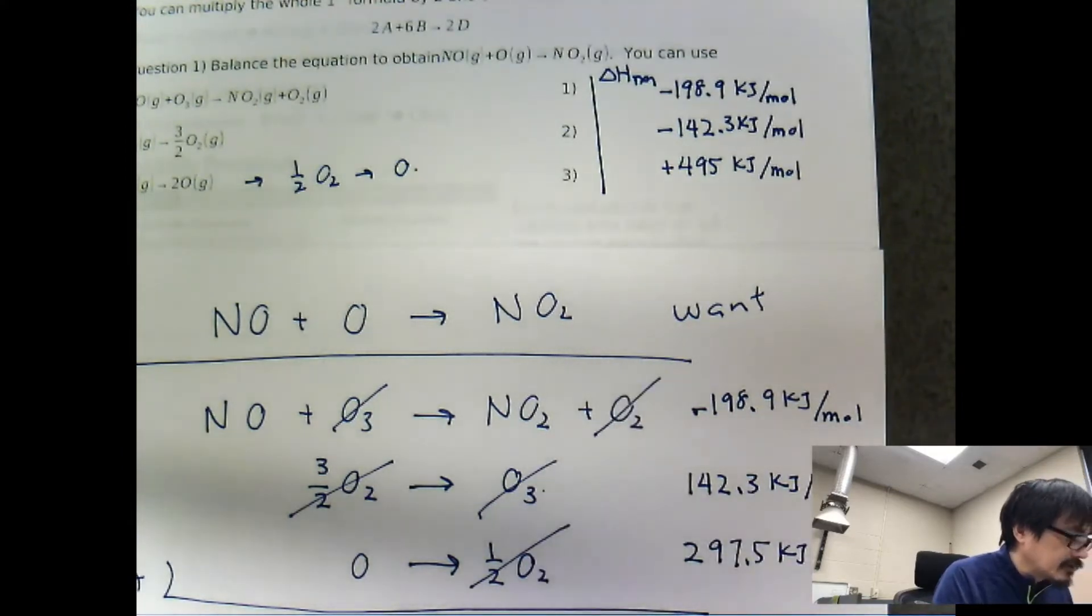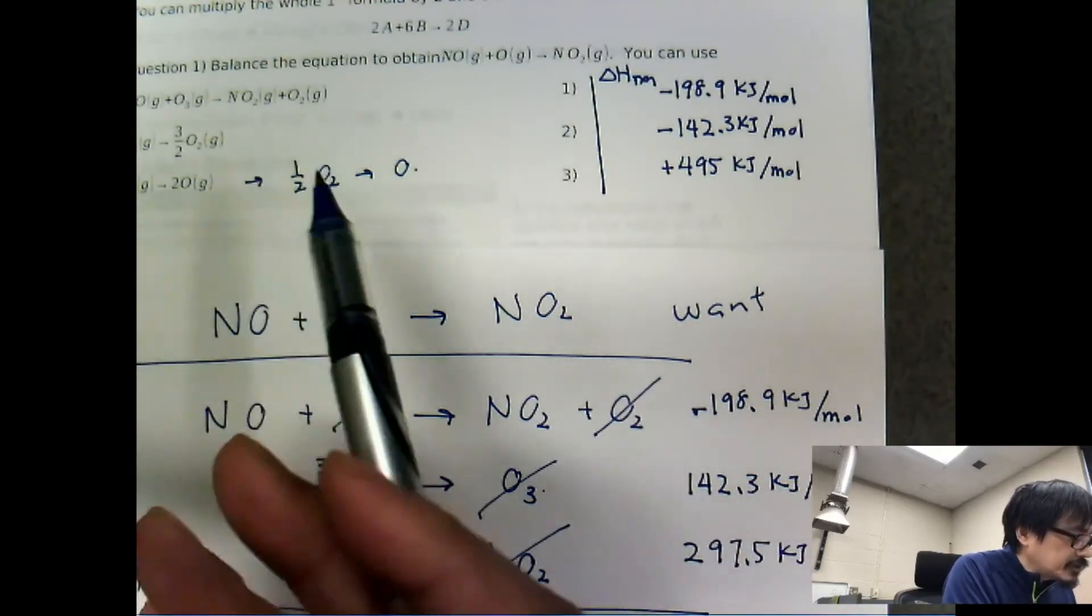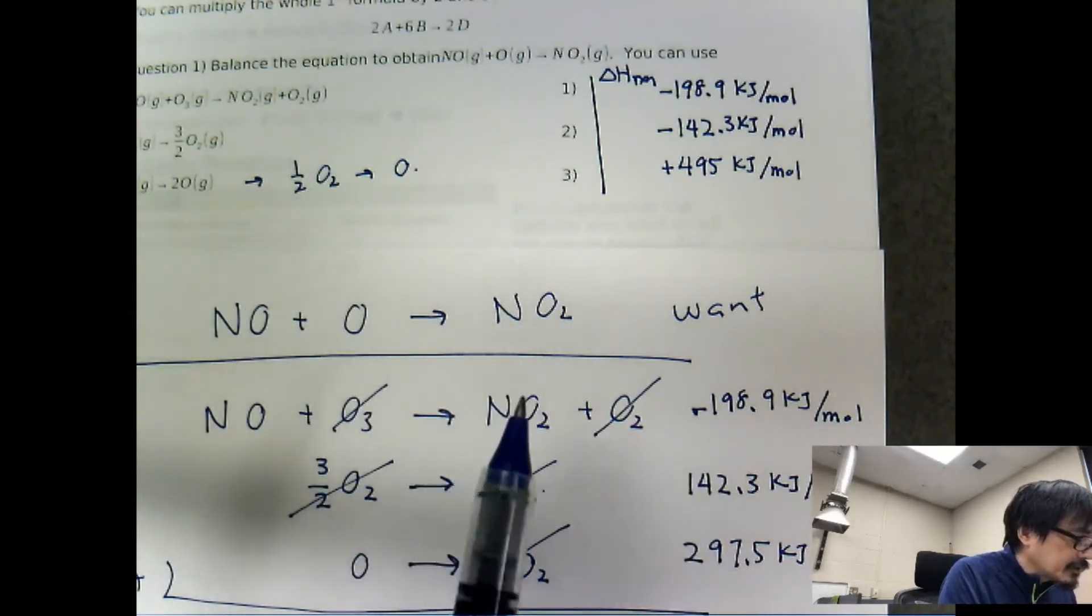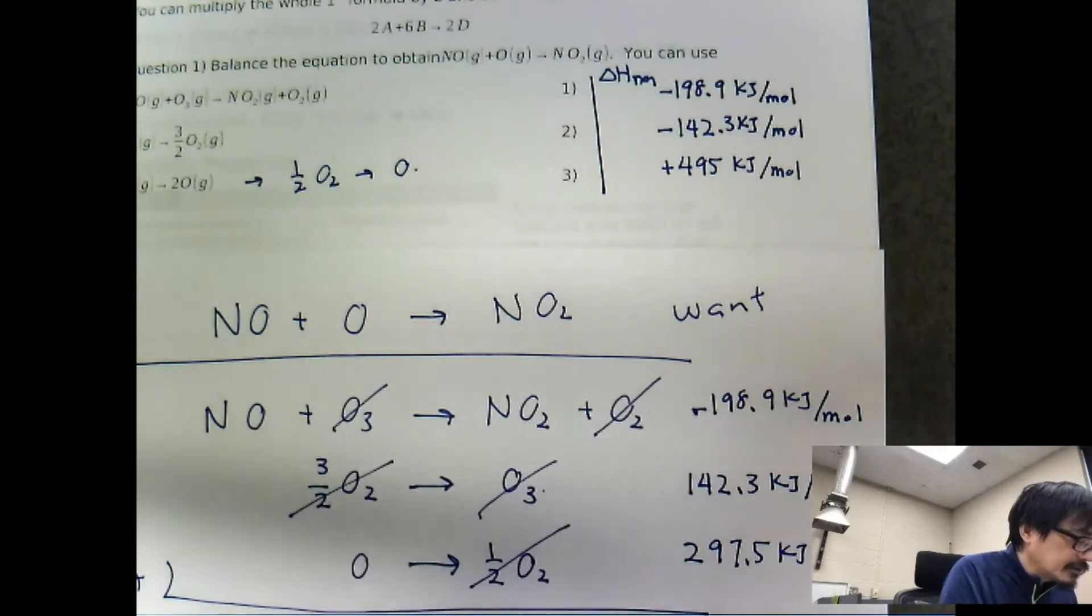is that positive or negative? We actually flipped, so the reactant becoming product and product becoming reactant, right? So that one right there is going to be negative.